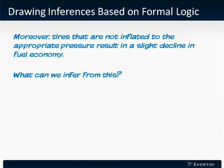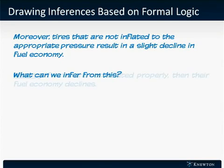What can we infer from this? Before we draw any inferences, it would be reasonable to rewrite this sentence in a logical way. We can rephrase this sentence as: if tires are not inflated properly, then their fuel economy declines. It's a cause and effect relationship — if you do not inflate your tires to the right pressure, you won't get the maximum miles per gallon that you can with your car.